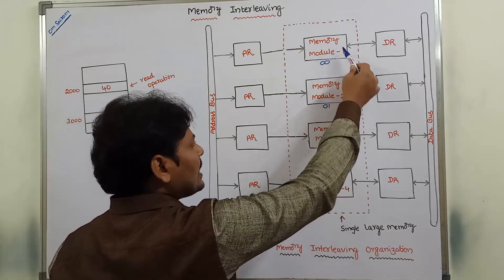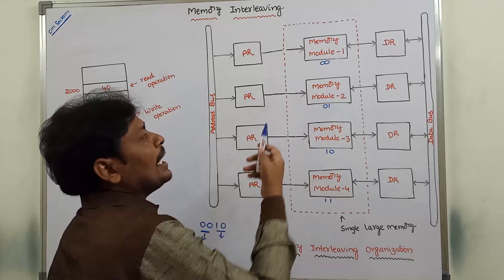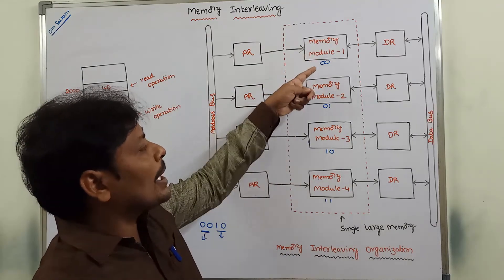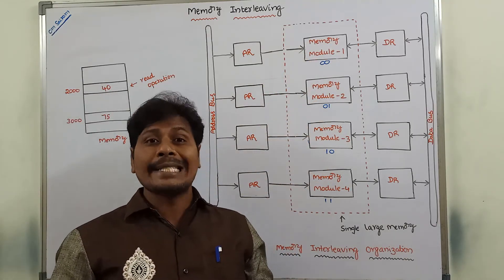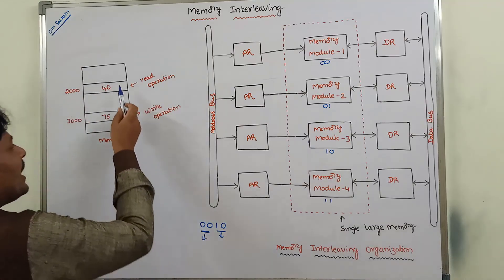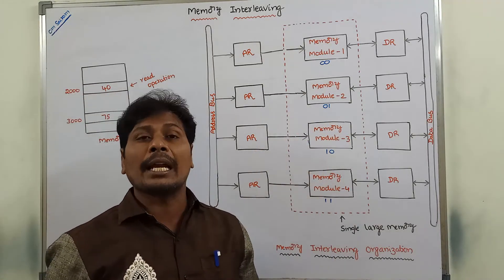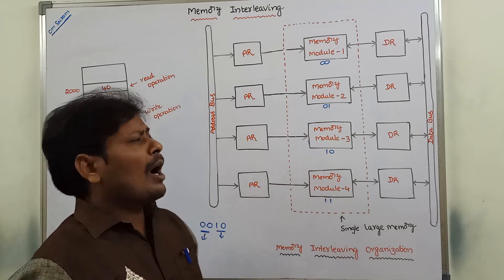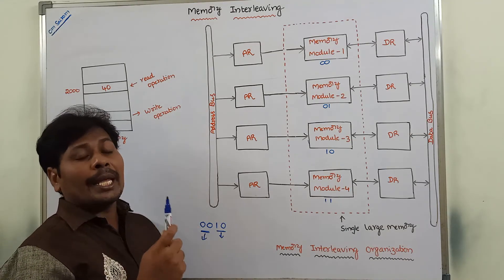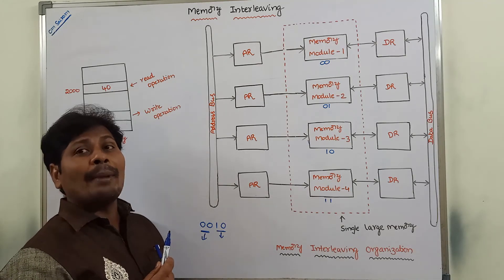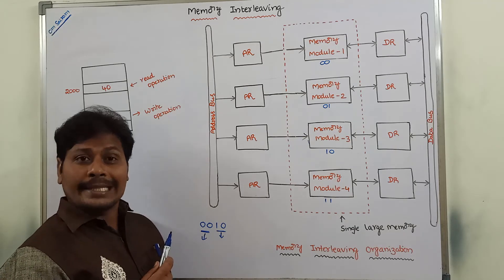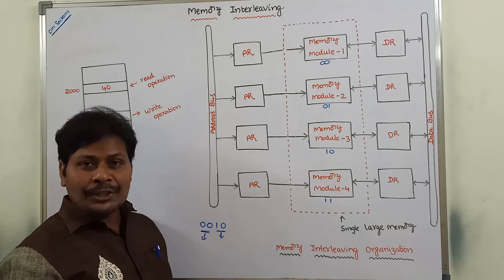Suppose this memory module is performing a read operation — among the three remaining memory modules, any one can perform a write operation at the same time. So four operations can be performed at the same time. This limitation of single memory is overcome in memory interleaving organization. The main advantages of memory interleaving organization are: it improves the performance of the system, and more than one operation — either read or write — can be performed at the same time.